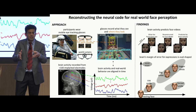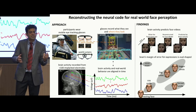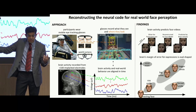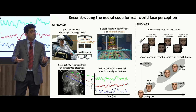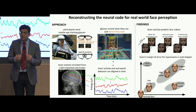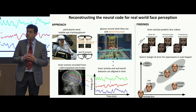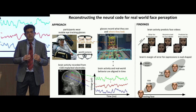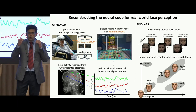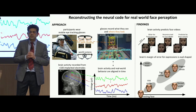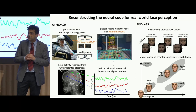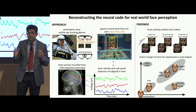Then, we trained mathematical models to predict these numbers using brain activity alone. And we were able to accurately predict videos of the original faces this way. Eventually, looking at the inner workings of these models revealed the brain's code for facial expressions in real life.